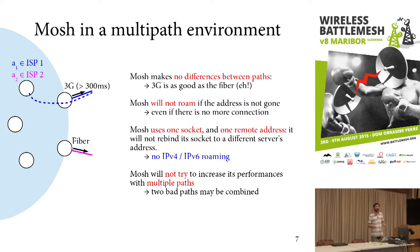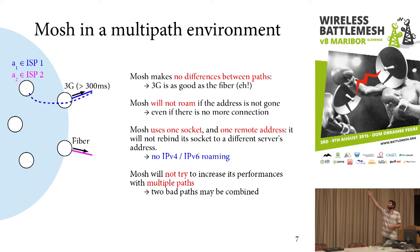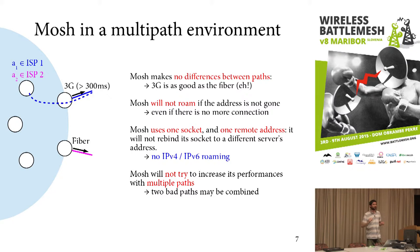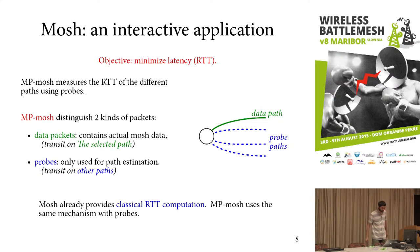However, in a multi-path environment, MOSH is not so perfect. First, it cannot distinguish the paths. So if you're using your 3G path with 300 milliseconds of delay and you have a fiber path which is just perfect, MOSH will not be able to switch to the best path. Also, it uses just one socket and binds to one address of the remote peer. So if you're in a dual-stack environment with IPv4 and IPv6, it will not be able to change to IPv6. And finally, it will not use multiple paths simultaneously, because it's a single-path application.